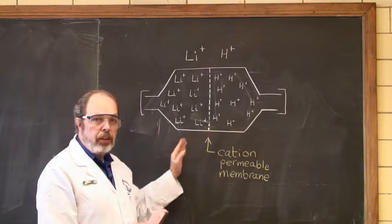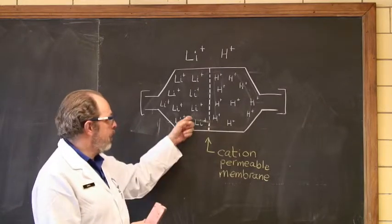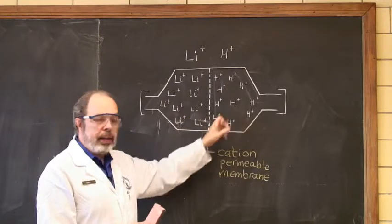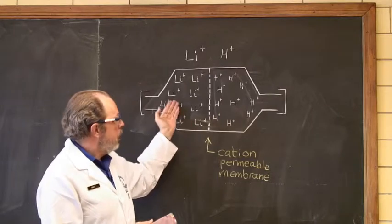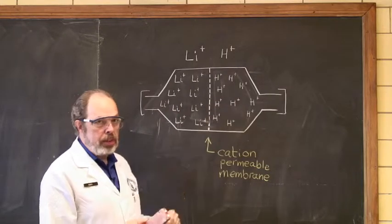There is a concentration gradient between the two. The concentration of lithium is very high here and the concentration of lithium over here is zero. So there is a push to get lithium over this side.